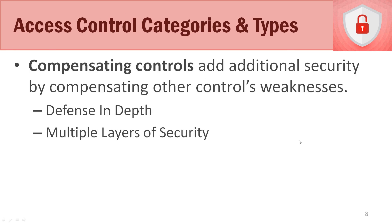Compensating access controls use multiple layers of access controls to compensate for the weakness of one or another. For example, you'd have a beware of dog sign and also security dogs, because there's an inherent weakness in just the sign alone. When we talk about compensating controls, we talk about defense in depth — layering multiple defenses — and with more layers, you're going to be more secure.